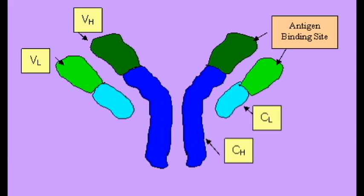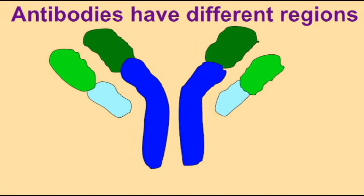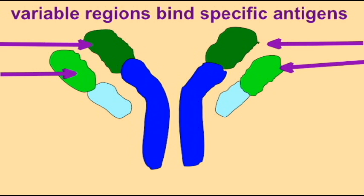Antibodies have different regions. There are the variable regions which bind the antigens and then there is the base, what's known as the constant heavy chain. This heavy chain can be switched in what's known as class switching through five different possibilities.